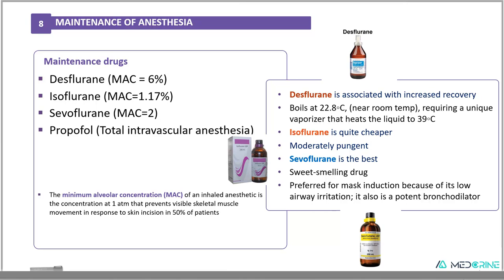Desflurane is associated with increased recovery speed. It is a unique inhalation anesthetic because it boils at 22.8 degrees Celsius, which is near normal room temperature, and therefore requires a unique vaporizer that heats the liquid to 39 degrees Celsius to vaporize it for administration. Isoflurane is cheaper and moderately pungent. Sevoflurane is one of the best maintenance anesthetic agents because it has low airway irritation and is a potent bronchodilator.